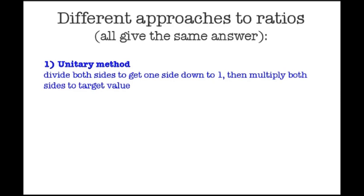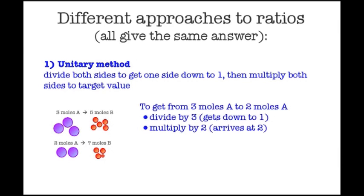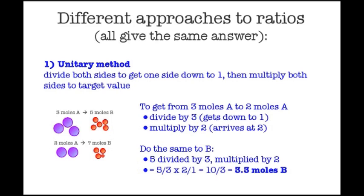Unit meaning one. In this method we divide both sides of the problem to get one side down to one, and then we multiply both sides to reach a target value. If we take one of our previous examples and look at A, first to get from three moles to two moles we divide by three to get down to one, and then multiply by two to arrive at two. So we follow the same approach for B. Five moles divided by three and multiplied by two gives us 3.3 moles.